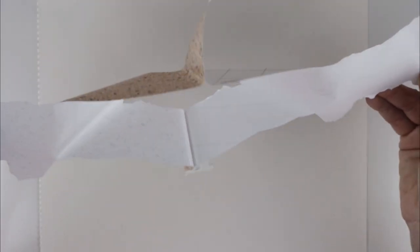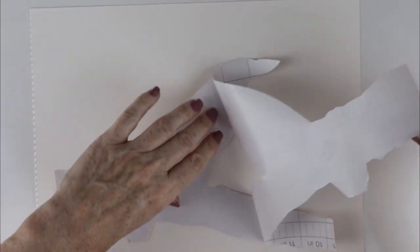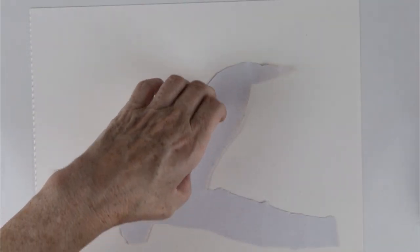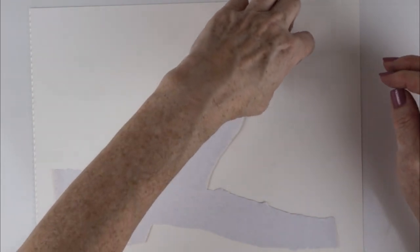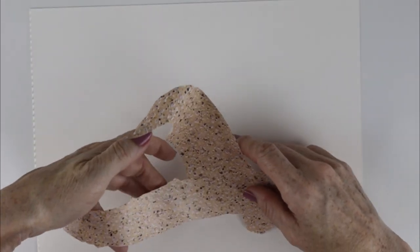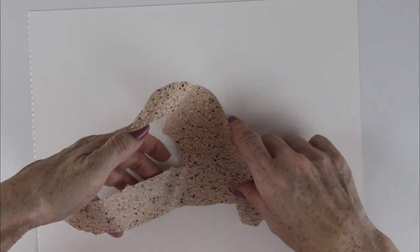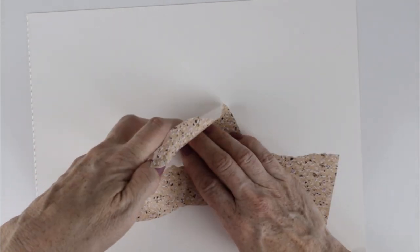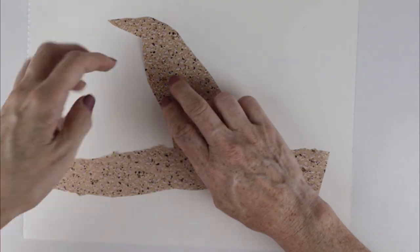I cut out the image I want to mask off and peel off the backing. It's completely removable so I'm not too worried about getting it exactly where I want it. I just try not to get it stuck to itself when I place it down as it won't become unstuck easily.